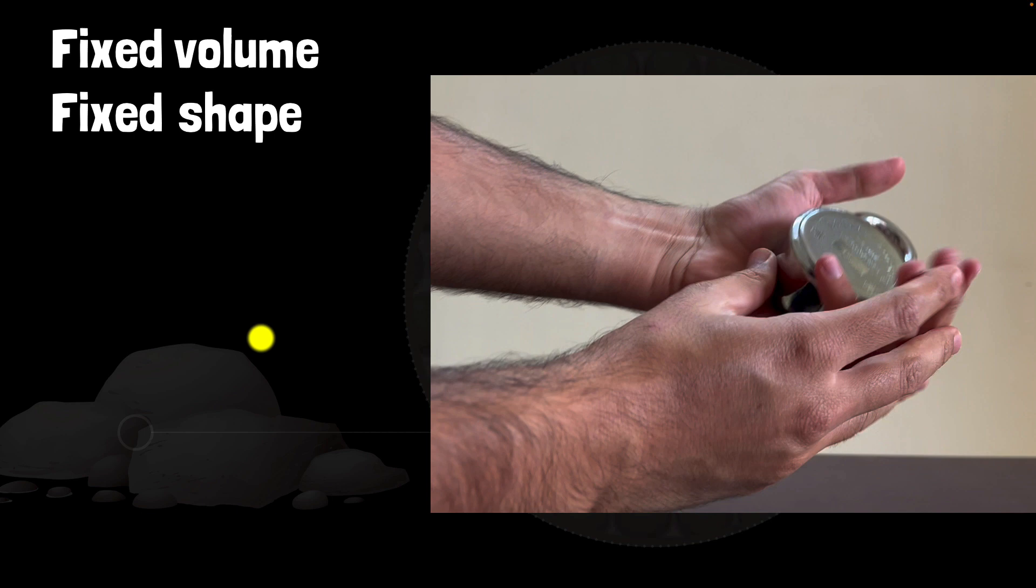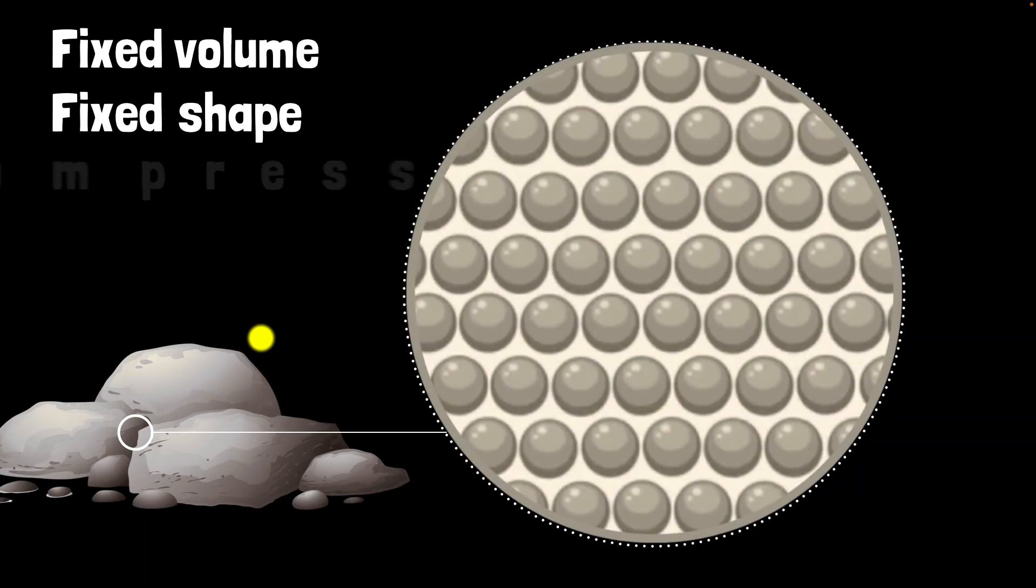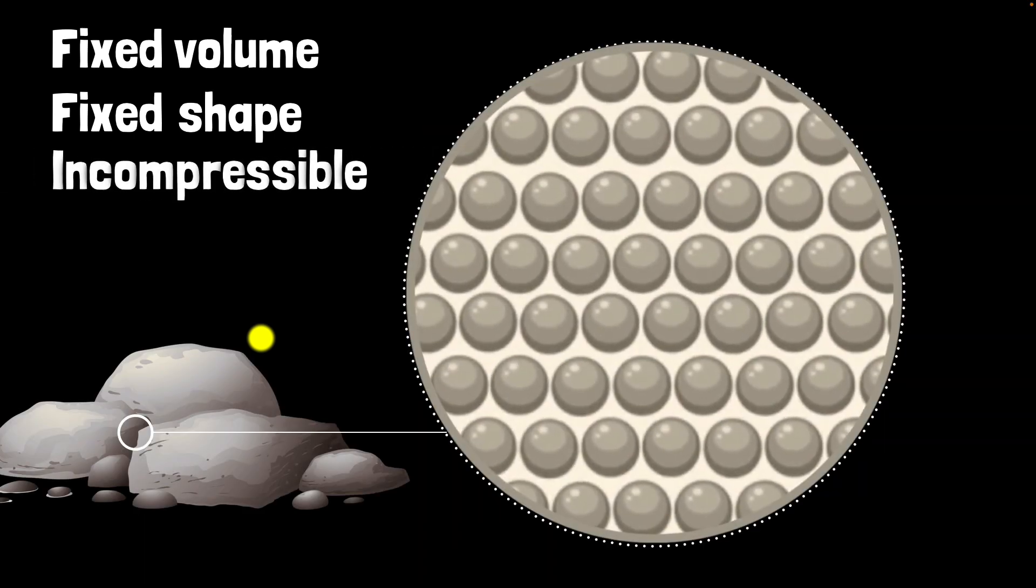They are unsquishable. In other words, we say solids are incompressible. You cannot compress them. So the particles inside solids are wiggling. They do have kinetic energy, but they are pretty much locked in place. As a result, they have a fixed shape and volume and are incompressible.